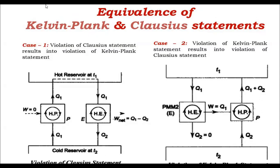Dear friends, we had discussed two statements of the second law of thermodynamics. One was the Kelvin-Planck statement and the other was known as the Clausius statement. The Kelvin-Planck statement says that we cannot construct a heat engine whose efficiency is 100%; any heat engine operating on a thermodynamic cycle has to reject certain heat. The Clausius statement says that we cannot construct a heat pump or a refrigerator which would pump heat from a lower temperature to a higher temperature without consuming any work.